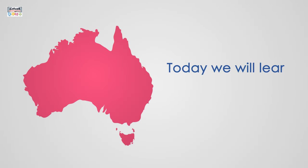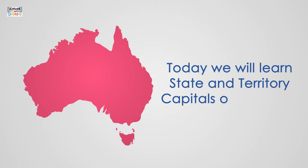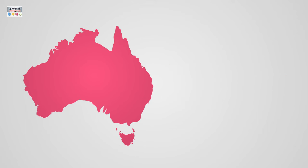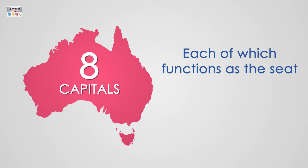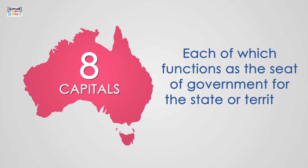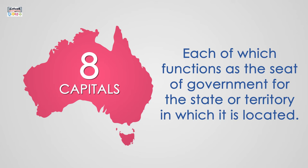Today we will learn State and Territory Capitals of Australia. There are eight capital cities in Australia, each of which functions as the seat of government for the state or territory in which it is located.